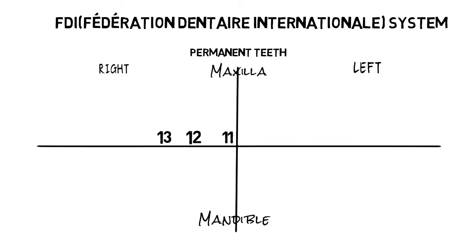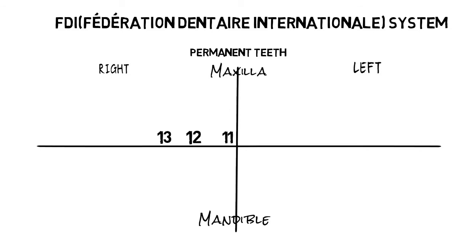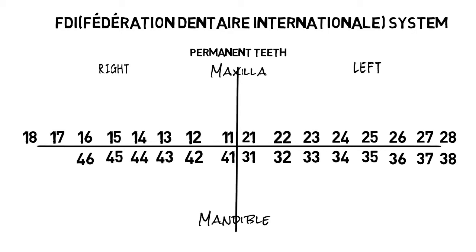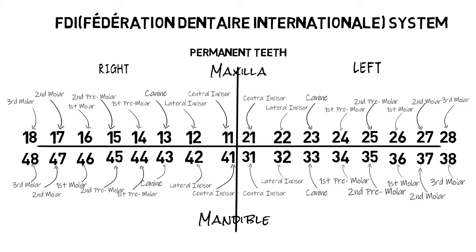Lastly, we have the FDI system. We will start with the permanent teeth. In the FDI system, there are two digits for each tooth: one digit represents the quadrant while the other represents the tooth. So 1 1 represents your right maxillary central incisor, 2 1 represents your left maxillary central incisor, 3 1 represents your left mandibular central incisor, and 4 1 represents your right mandibular central incisor.